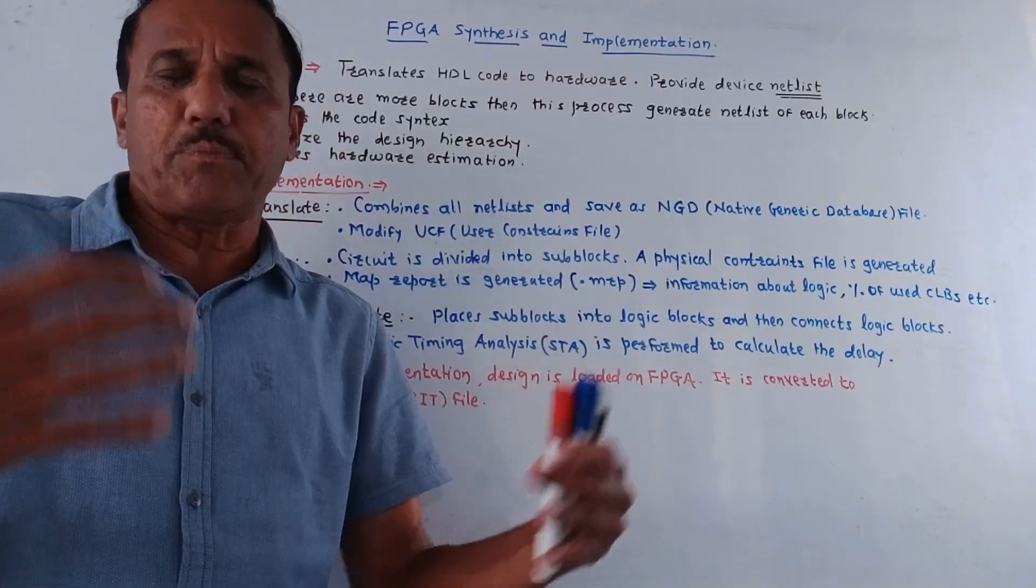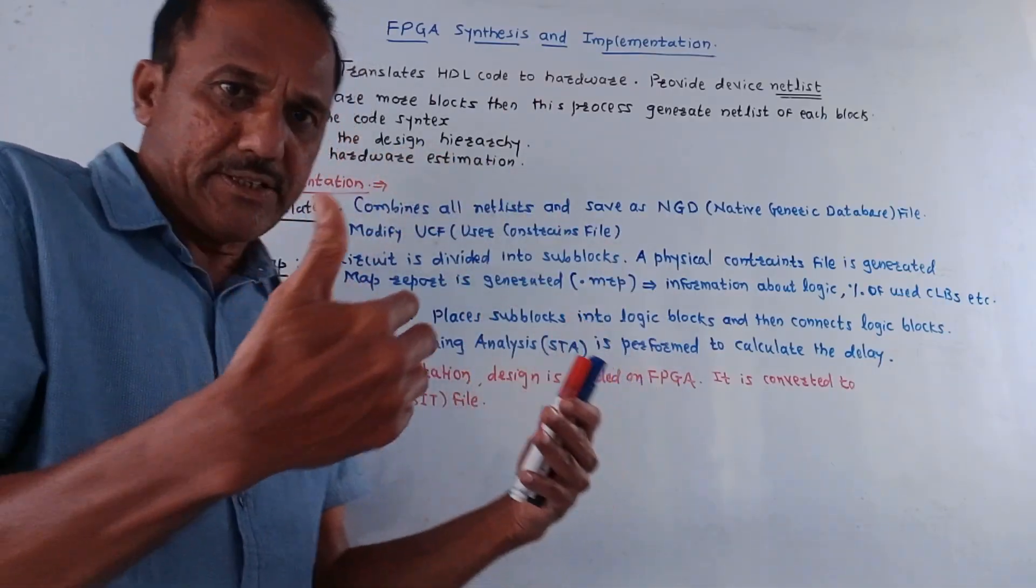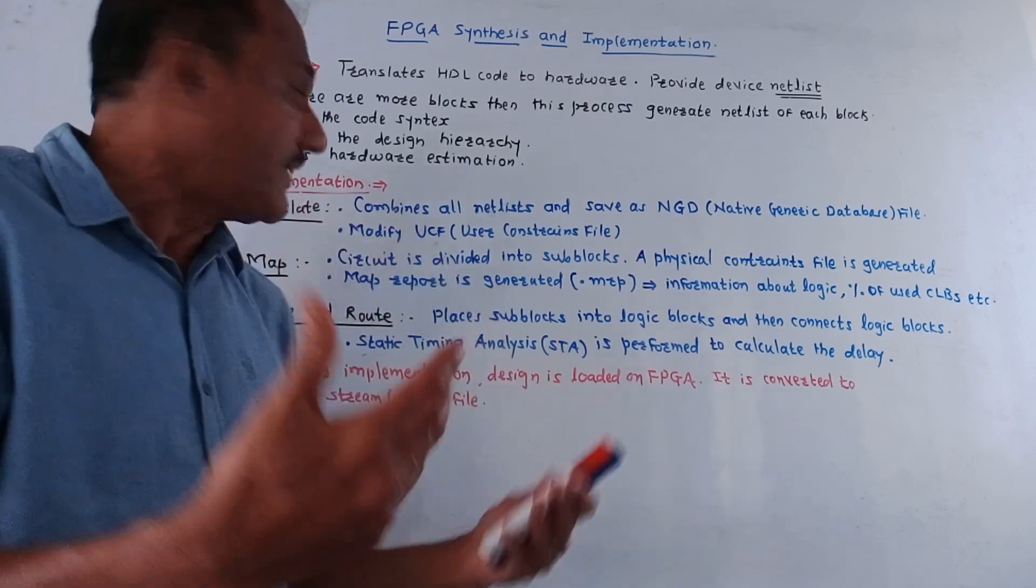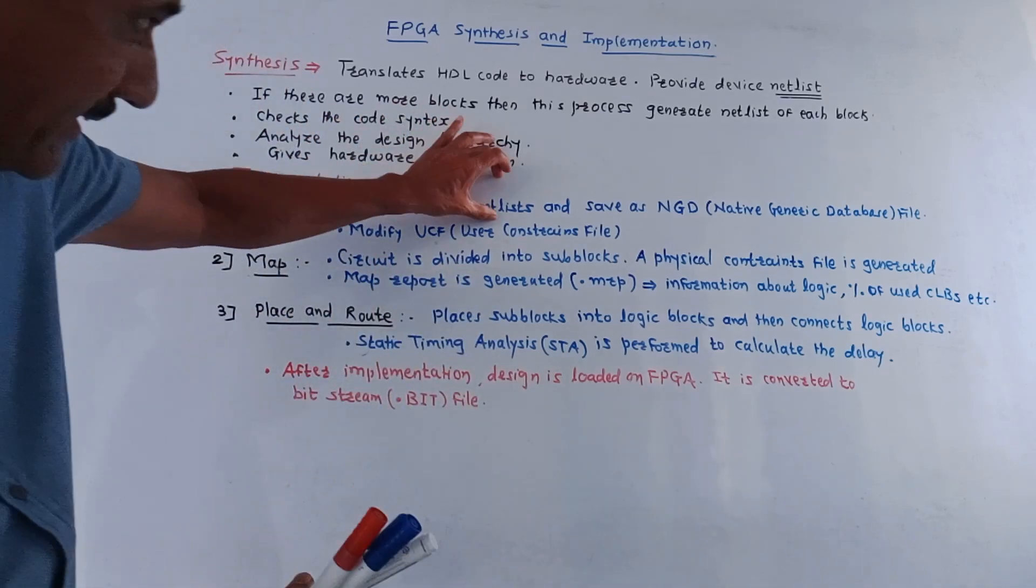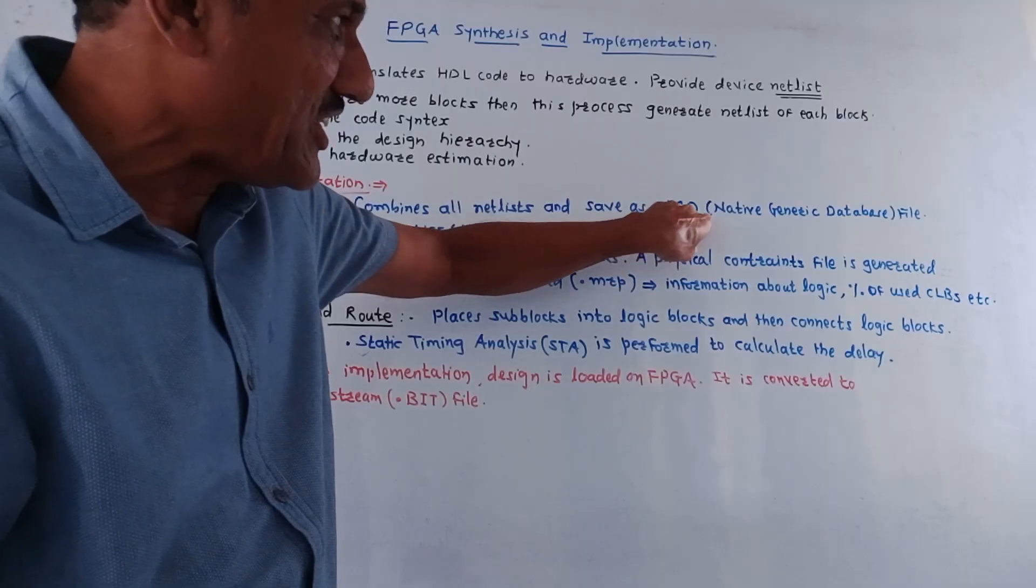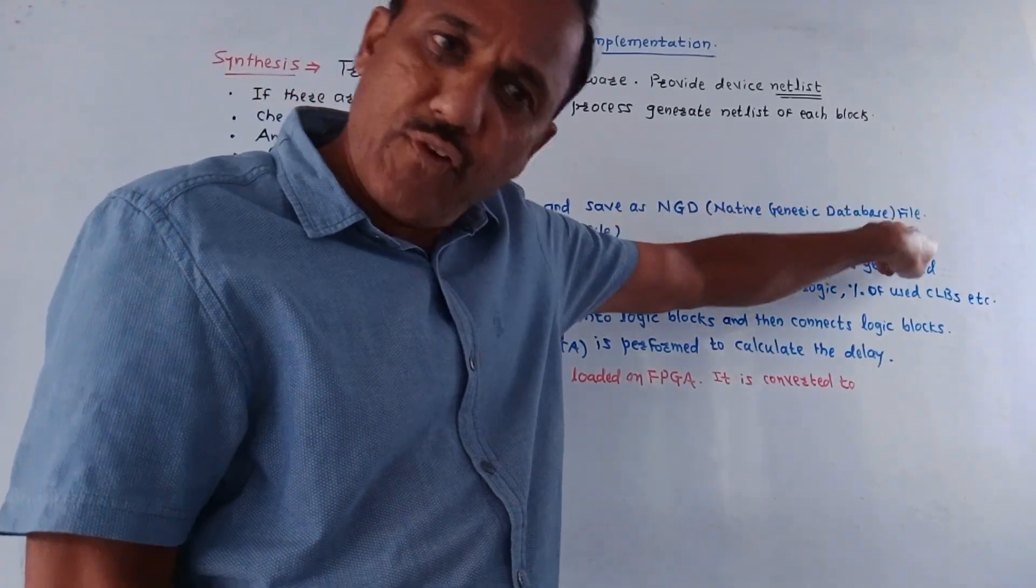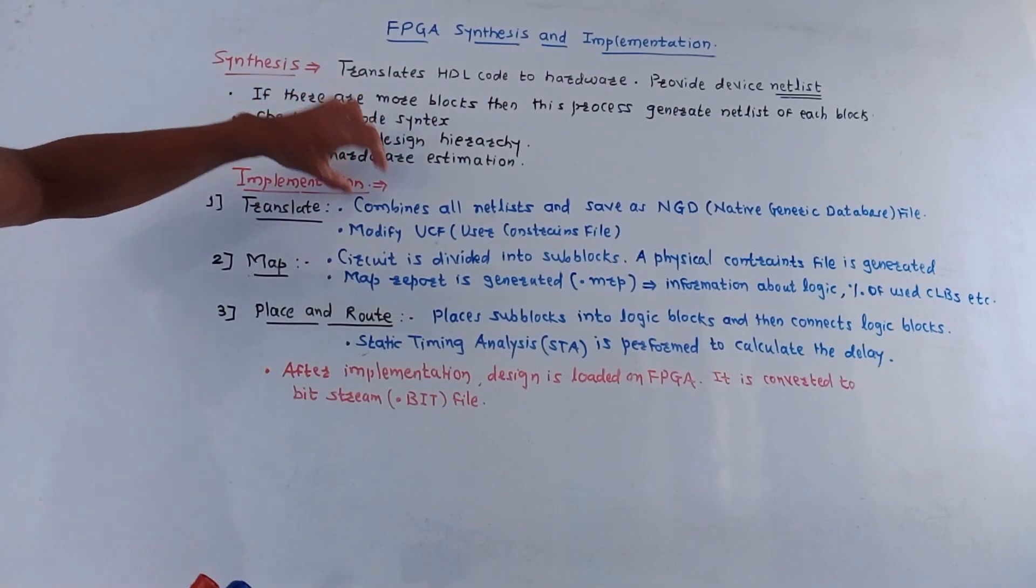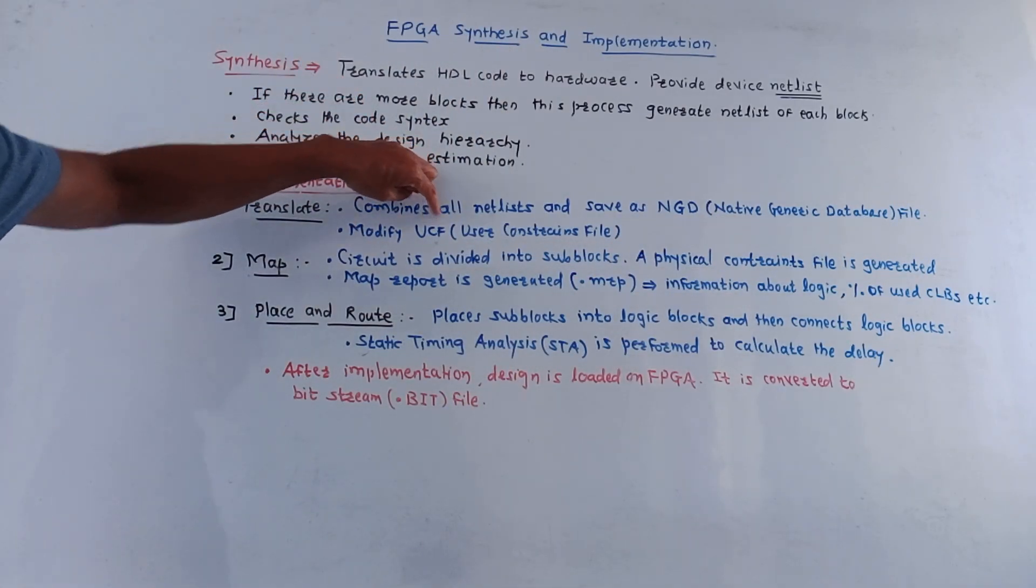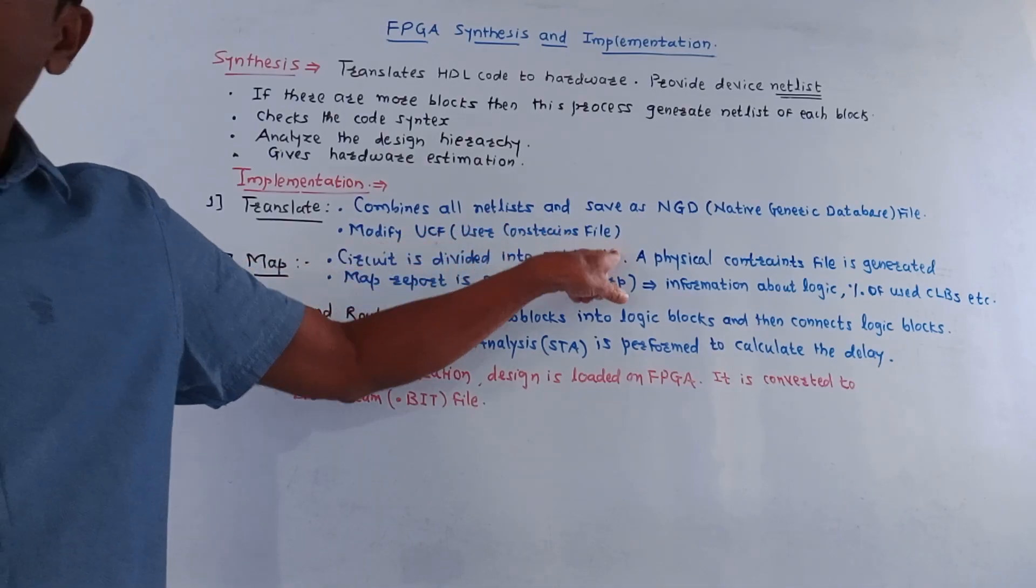In this step all the netlists are combined. Just now I explained netlist means it provides the complete circuit with all the logical elements. So it combines all netlist and saves as NGD, that is native generic database file.